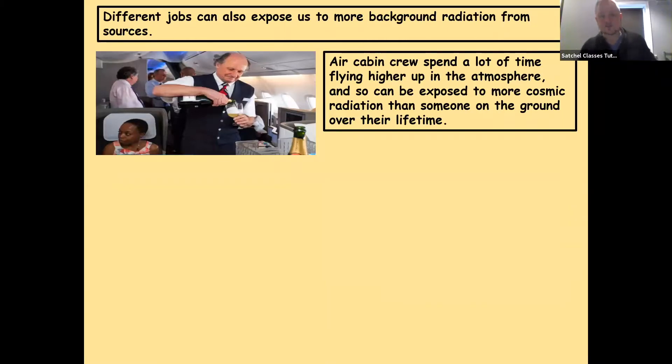As well as that, different jobs can also expose us to more background radiation from different sources. Air cabin crews spend a lot of time flying higher up in the atmosphere, and because they're flying higher up, the protective effect of the atmosphere is less for them. So they're exposed to more cosmic radiation than someone on the ground over their lifetime of work.